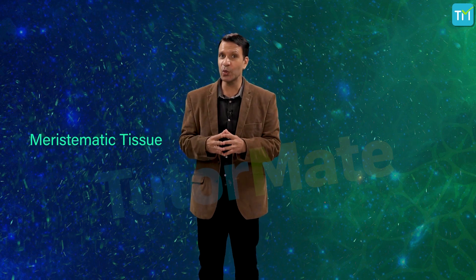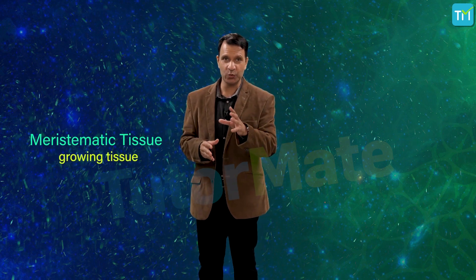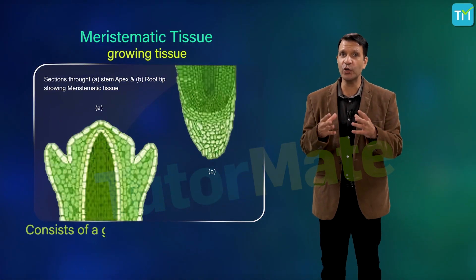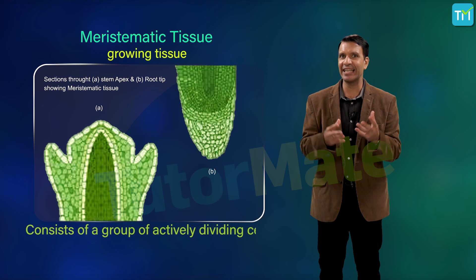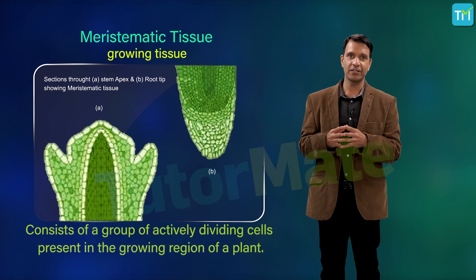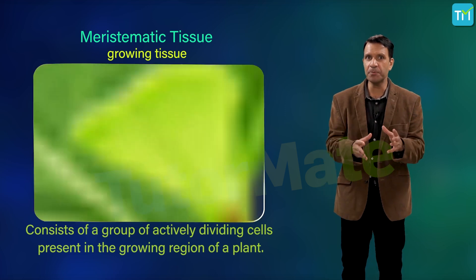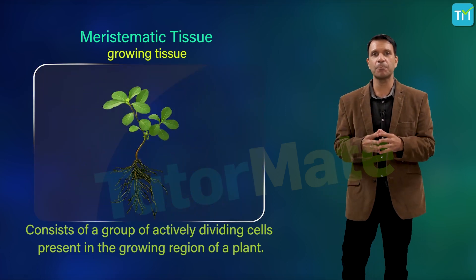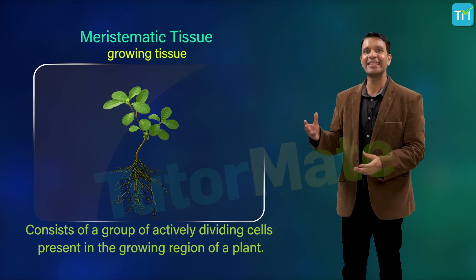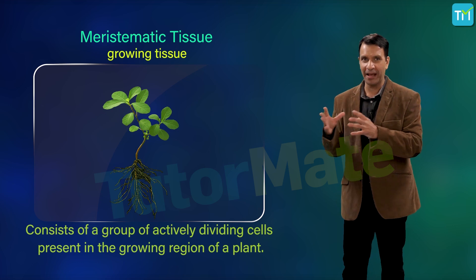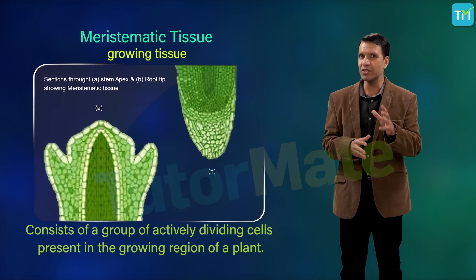A meristematic tissue consists of a group of actively dividing cells present in the growing region of a plant, for example the tips of roots and stems. These tissues are responsible for increasing the length and girth—that is, the thickness—of the stem of the plant.